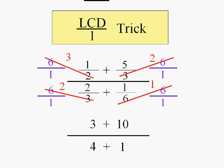And my final answer is 3 plus 10 over 4 plus 1, simplified. It's not that bad if you use the LCD over one trick. Notice we've removed the fractions from the fraction. We've simplified this complex fraction.